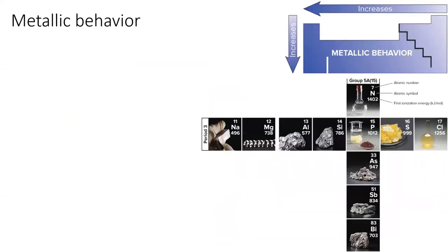The most metallic of all metals is cesium, which lives at the bottom left portion of the table, because metallic behavior increases as we go left and down on the table. Most metals share the following properties: they're shiny solids, which is their most familiar property. It's actually the delocalization of their weakly held valence electrons that lets them reflect light efficiently.